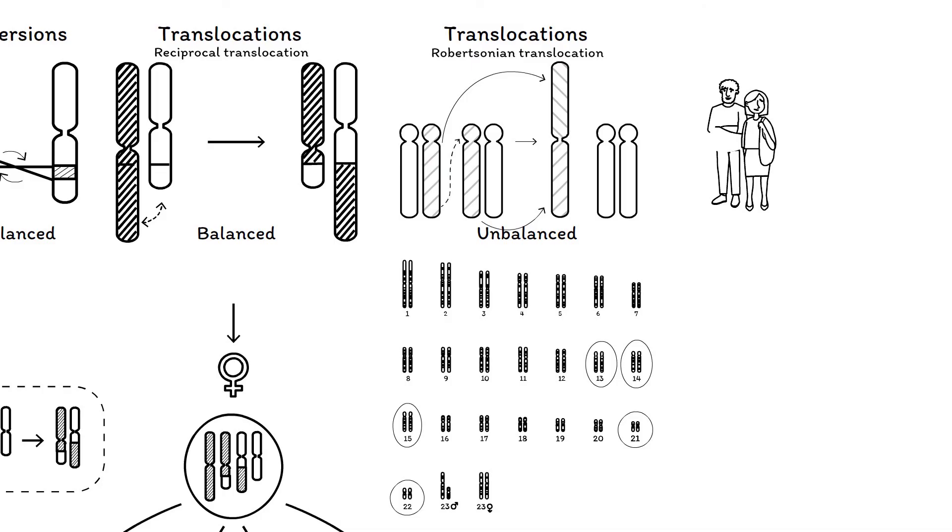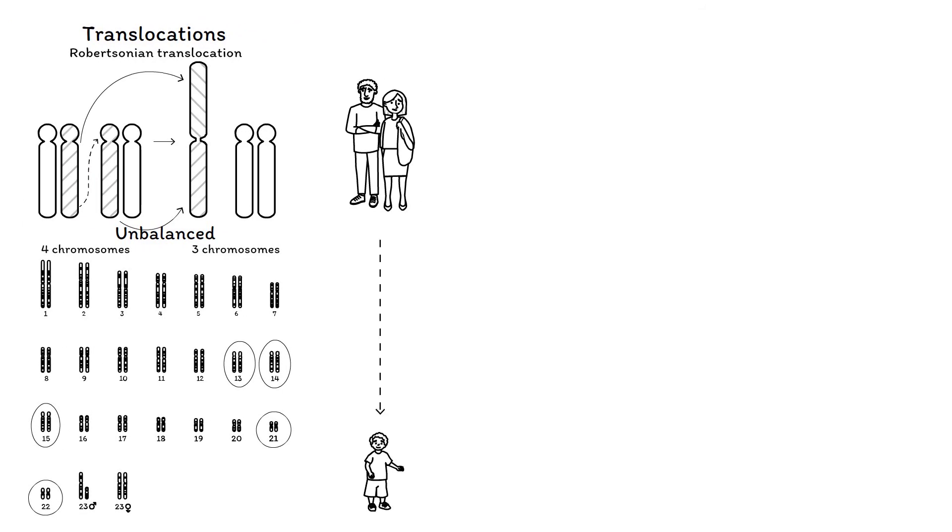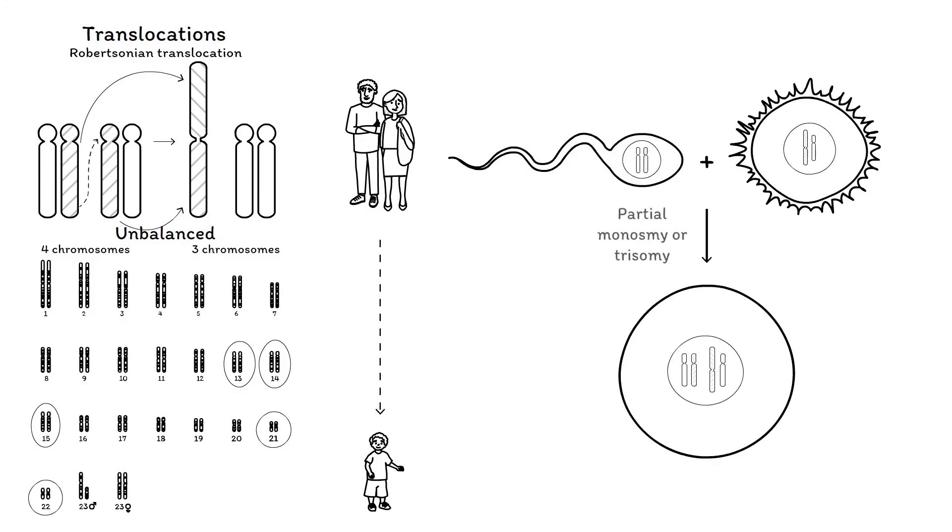This has no effect on the carrier because the short arms of the involved chromosomes are very small and contain no essential genetic material. However, as the chromosomes are joined, there is a reduction in the number of chromosomes. Like reciprocal translocations, Robertsonian translocations may affect the offspring of carriers, since they may originate from a gamete with a missing or an extra chromosome, causing either a partial monosomy or trisomy. If chromosomes 13 or 21 are involved, this could lead to Patau or Down syndrome, respectively.